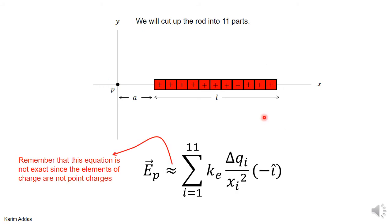If you want to write down the total electric field at point P as a summation, you can sum 1 to 11 ke Δqi over xi² in the minus i hat direction. Now remember, this is still an approximation. In principle, you shouldn't do this because there's no justification for using the equation of a point charge for this problem when you cut it up into 11 parts. This is just to illustrate the idea.